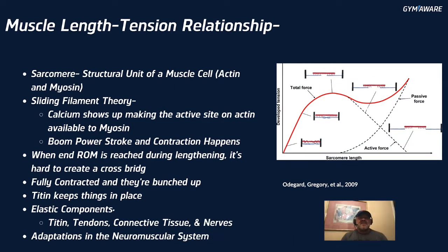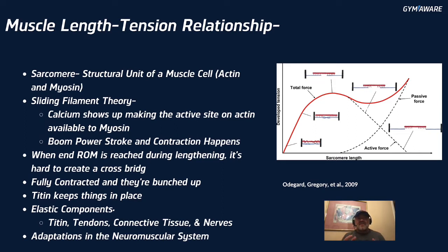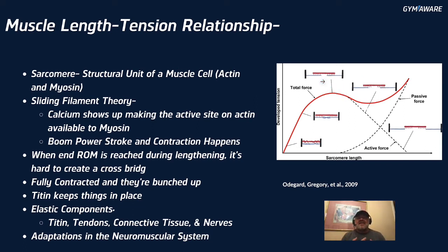The muscle length-tension relationship — I'm going to try to make this as simple as possible. We're talking about the sarcomere, the structural unit of a muscle cell. You've probably heard actin and myosin. With the sliding filament theory, when calcium shows up there's a site on actin that opens up, myosin is attracted to it, latches on, performs the power stroke, and contraction happens.